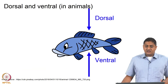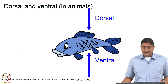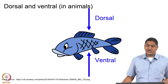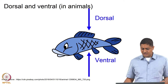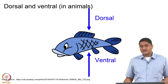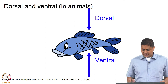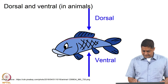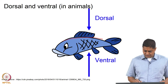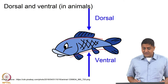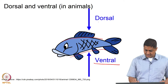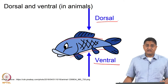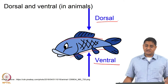Dorsal and ventral refer to the following: in quadrupeds, or in animals that are swimming or moving horizontally — for example, in the case of a fish — dorsal refers to that part of the body facing the sky or the roof, and ventral refers to that part of the body facing the floor. So this is ventral and this is dorsal in quadrupeds and in animals that are swimming.